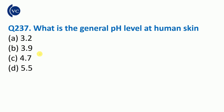Next question: what is the general pH level of human skin? The general pH level of human skin is 5.5.